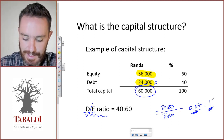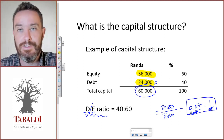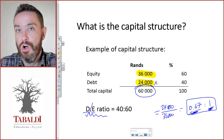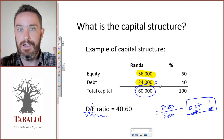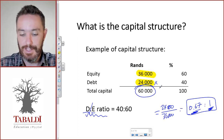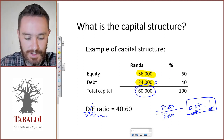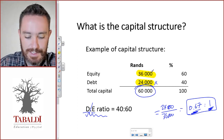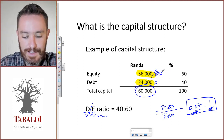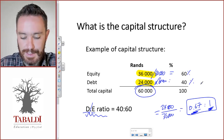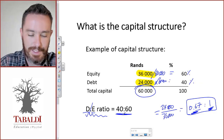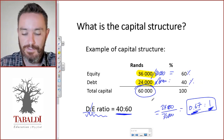So the debt is 67% of equity, or for every one rand worth of equity we have 67 cents worth of debt. That's one way to express the answer. Alternatively, you can write it as a percentage of total assets: equity is 36,000 divided by total funds of 60,000, which gives 60%; and debt is 24,000 divided by 60,000, which gives 40%. So the debt-equity ratio can be written as 40:60.